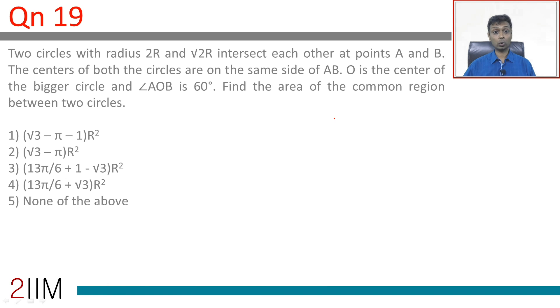Two circles with radius 2R and root 2R, radii 2R and root 2R intersect at points A and B. So, 2R and root 2R, root 2R.